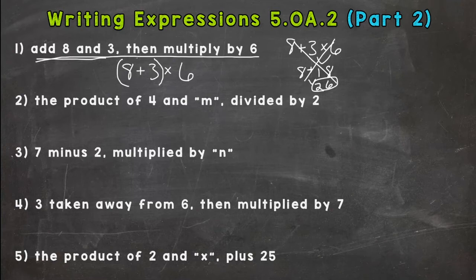Number two, the product of 4 and M. Remember, variable. And when we multiply a number by a variable, we do not want to use an X for the multiplication sign, because that can be confused as an X. So I'm going to do 4M, a 4 right next to the M. That means 4 times M. Then we divide it by 2. And just for a good habit here, I'm going to put parentheses around what I do first.